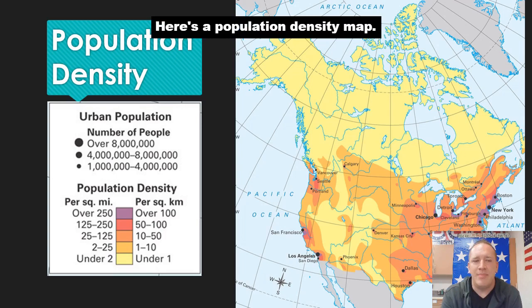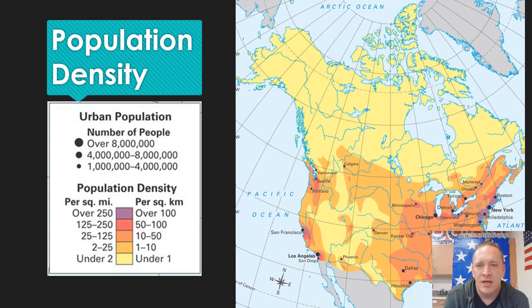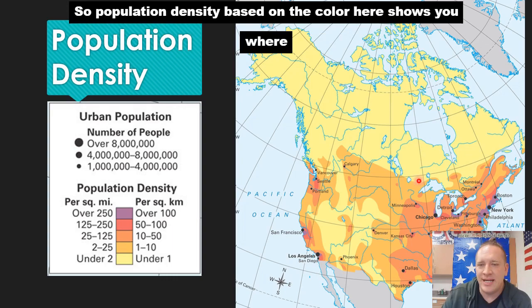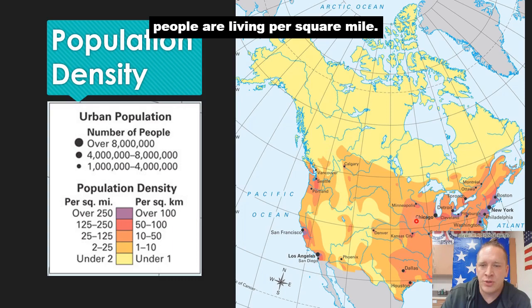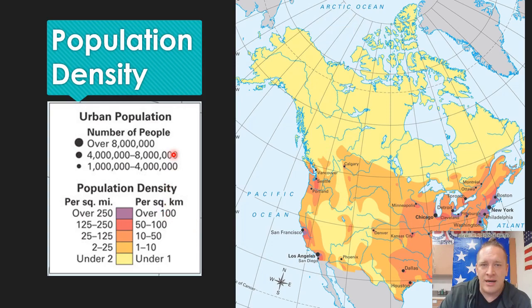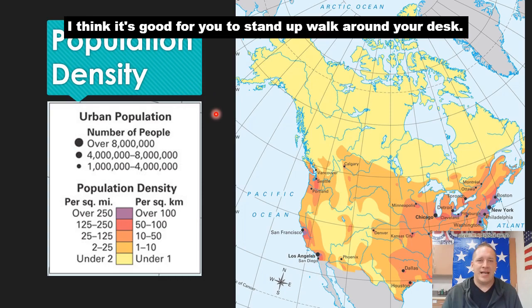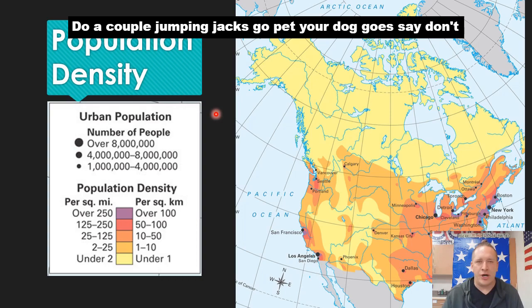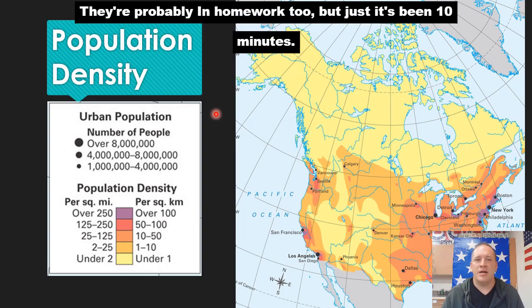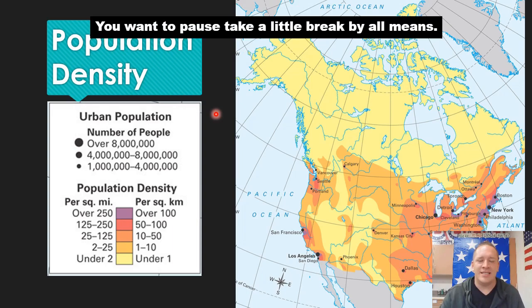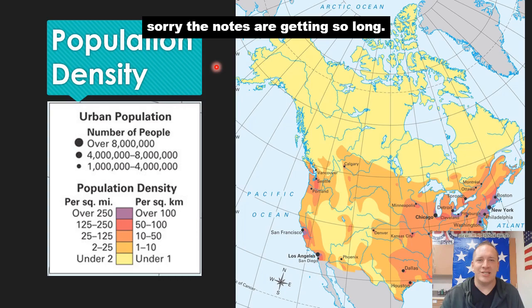Here's a population density map. Population density based on the color shows you where people are living per square mile. If you want to pause and take a look at this, please do. Every 10 minutes or so, it's good for you to stand up, move around your desk, do some jumping jacks, go pet your dog. Just take a quick break if you need one.